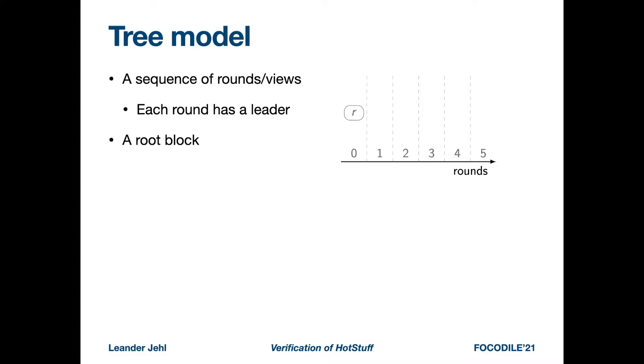In the tree model, there is a sequence of rounds or views, and typically each round has a leader. Initially, the tree consists of a root or genesis block in round zero. The leader of a round can propose a value by adding a new node or block.